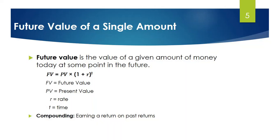FV is equal to PV into 1 plus r to the power t. FV indicates future value, PV indicates present value, r indicates rate of return, and t is the time period.